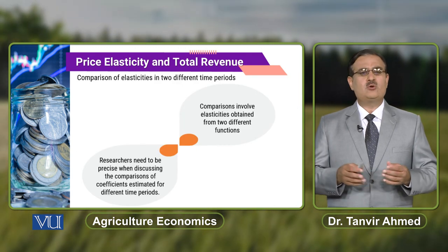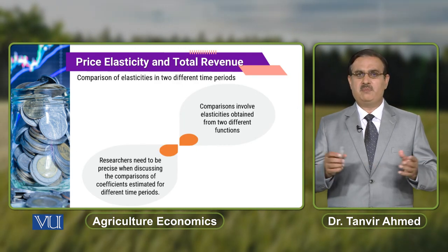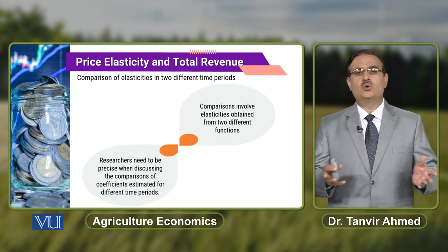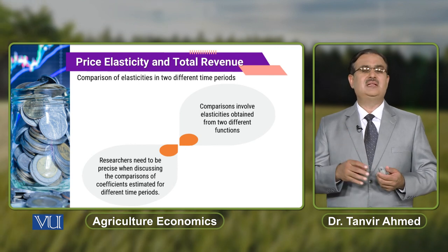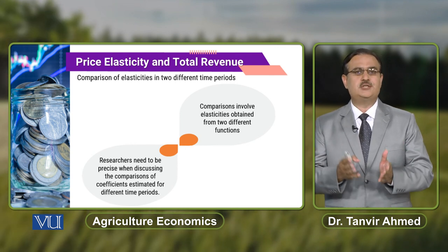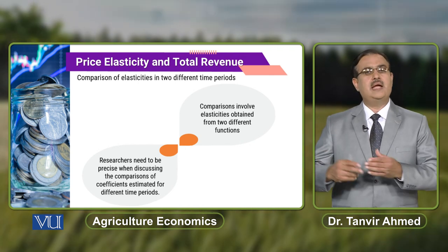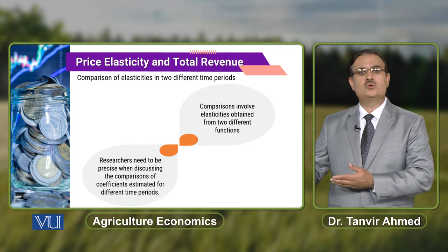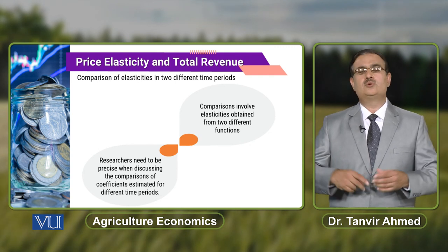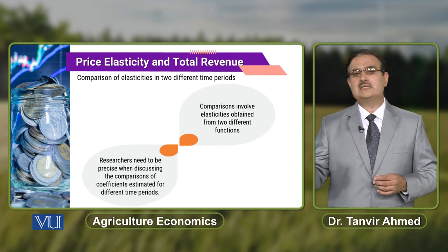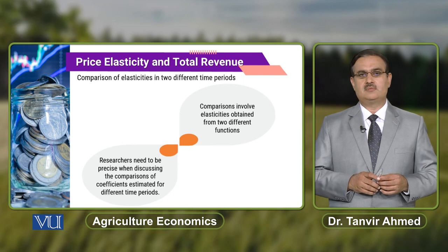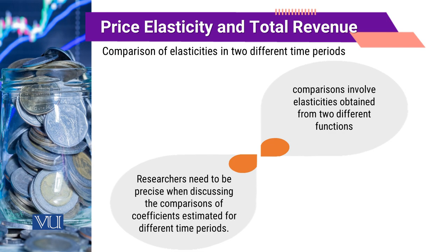On this same pattern, it will not be a proper statement if we make a comparison of elasticity in two different time periods. When you talk about two different time periods, it might be possible there is a change in association between variables — in one time period there may be a linear association, and in another time period there may be a non-linear association among variables. When you compute elasticities across two different time periods, they will not report anything meaningful.